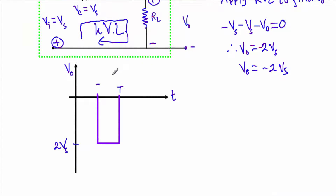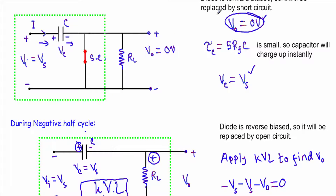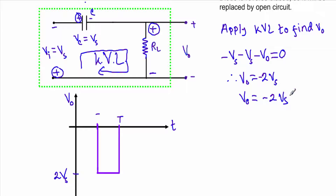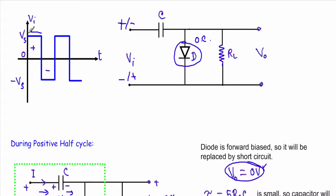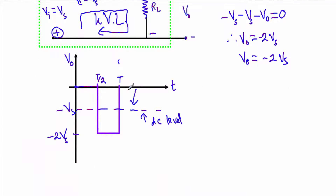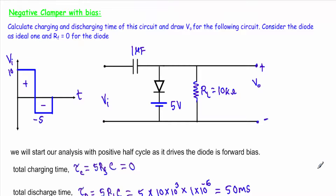If I draw our output voltage, you will see that during the positive half cycle our output voltage is 0 and during the negative half cycle our output voltage is equal to minus 2Vs. This is our positive half cycle and this is our negative half cycle. The reference level will have a value of Vs. The negative clamper has shifted the DC level of the input voltage in the downward direction such that at the positive peak of the input voltage, the waveform will touch the horizontal axis.